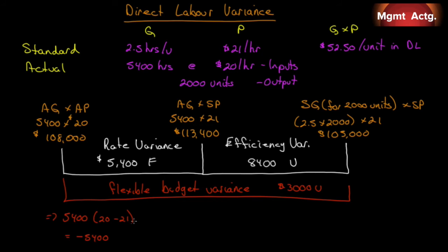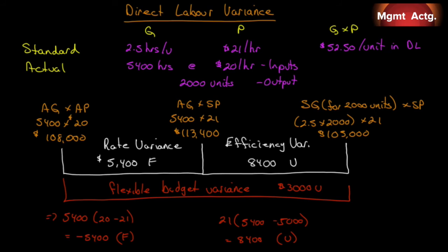Calculating it the shortcut way: the rate variance is 5,400 times ($20 minus $21) — actual price minus standard price — giving $5,400 favorable. For the efficiency variance: standard price of $21 times (actual quantity of 5,400 minus standard quantity of 5,000) is $21 times 400, which is $8,400 unfavorable.